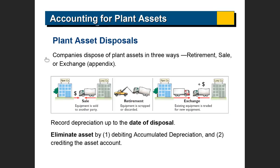You can get rid of the asset in one of three ways: you can sell it, you can retire it — which is getting rid of it without getting anything in exchange — or you can exchange it. In any one of these cases, you have to debit the accumulated depreciation and credit the asset to remove it. If you sell it and get cash, and the cash is more than the book value, you have a gain. If the cash is less than the book value, you have a loss.